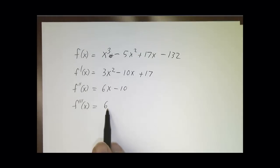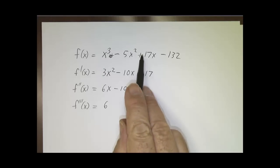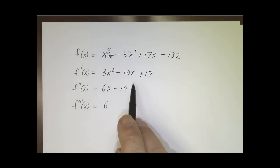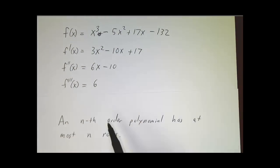This doesn't have any roots. So this has at most one root. In fact, it has one. This has at most two roots. And this has at most three roots. So in general, you can apply this to any polynomial. Since the n-th derivative of a polynomial is never zero, an n-th order polynomial has at most n roots.